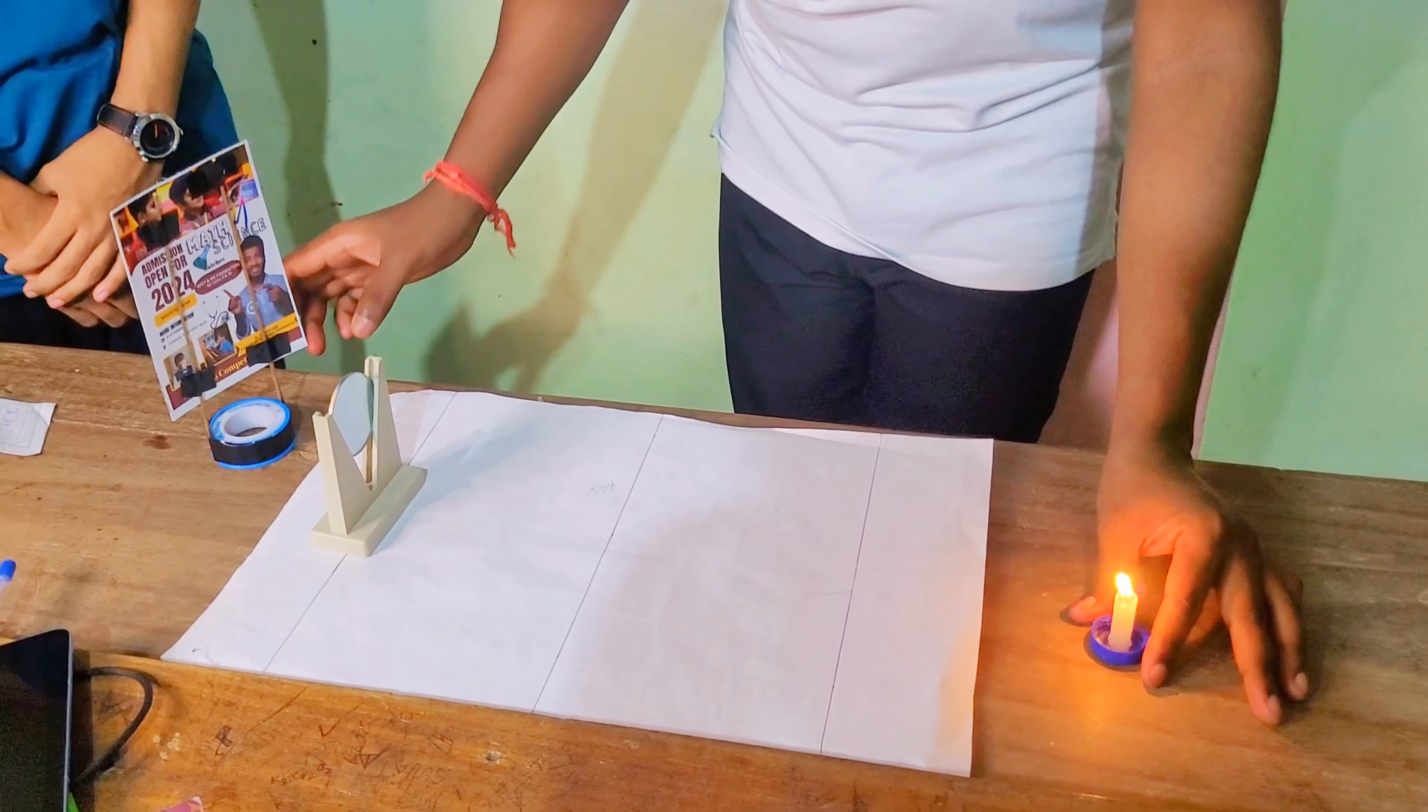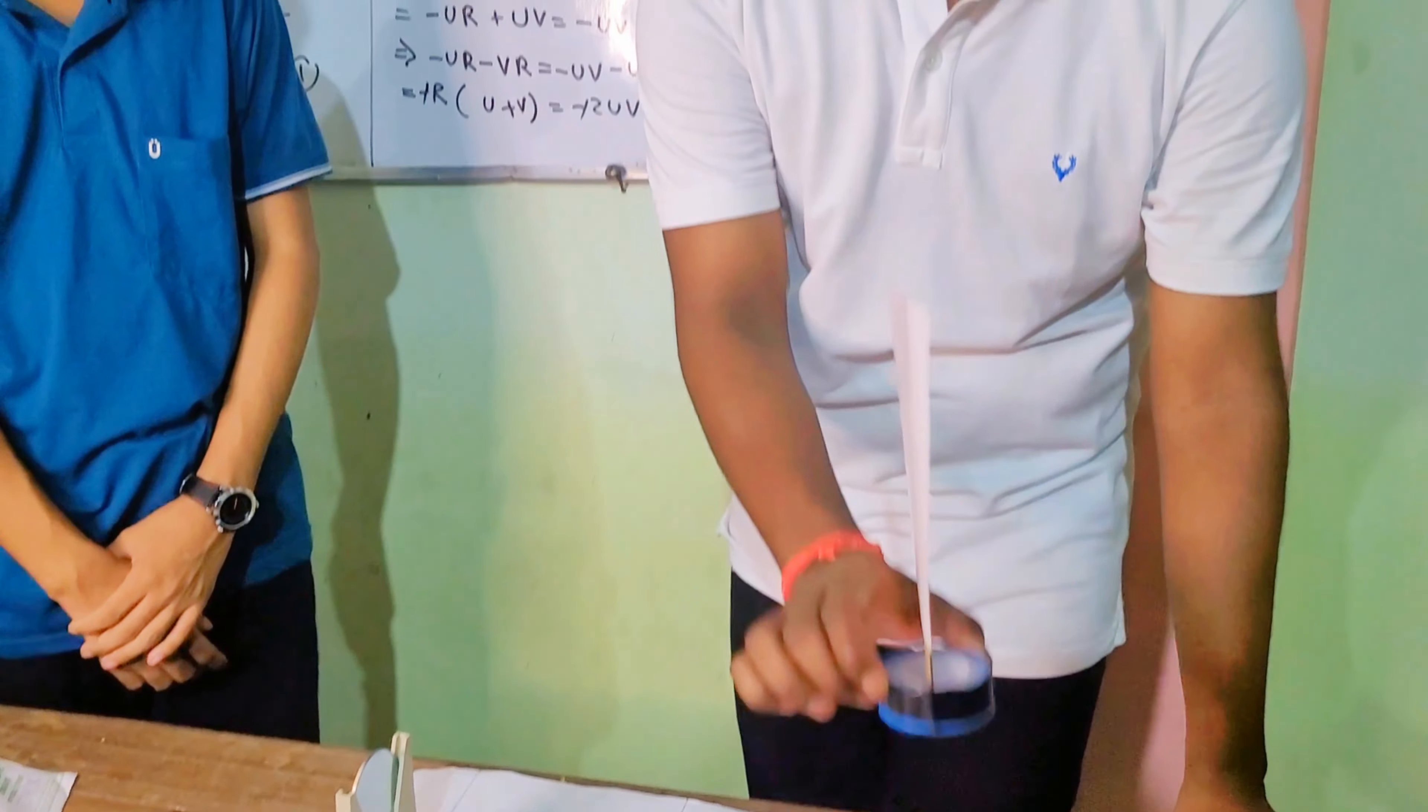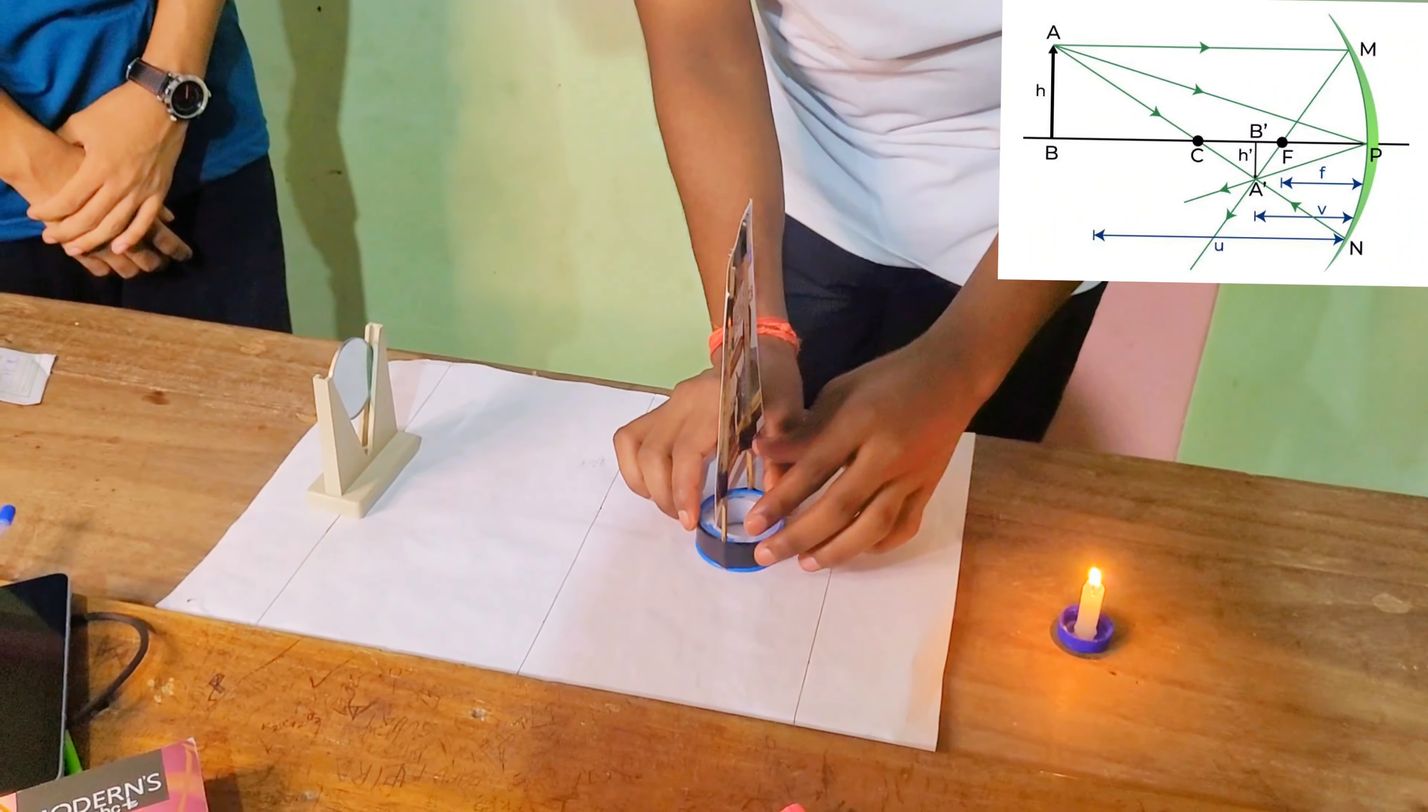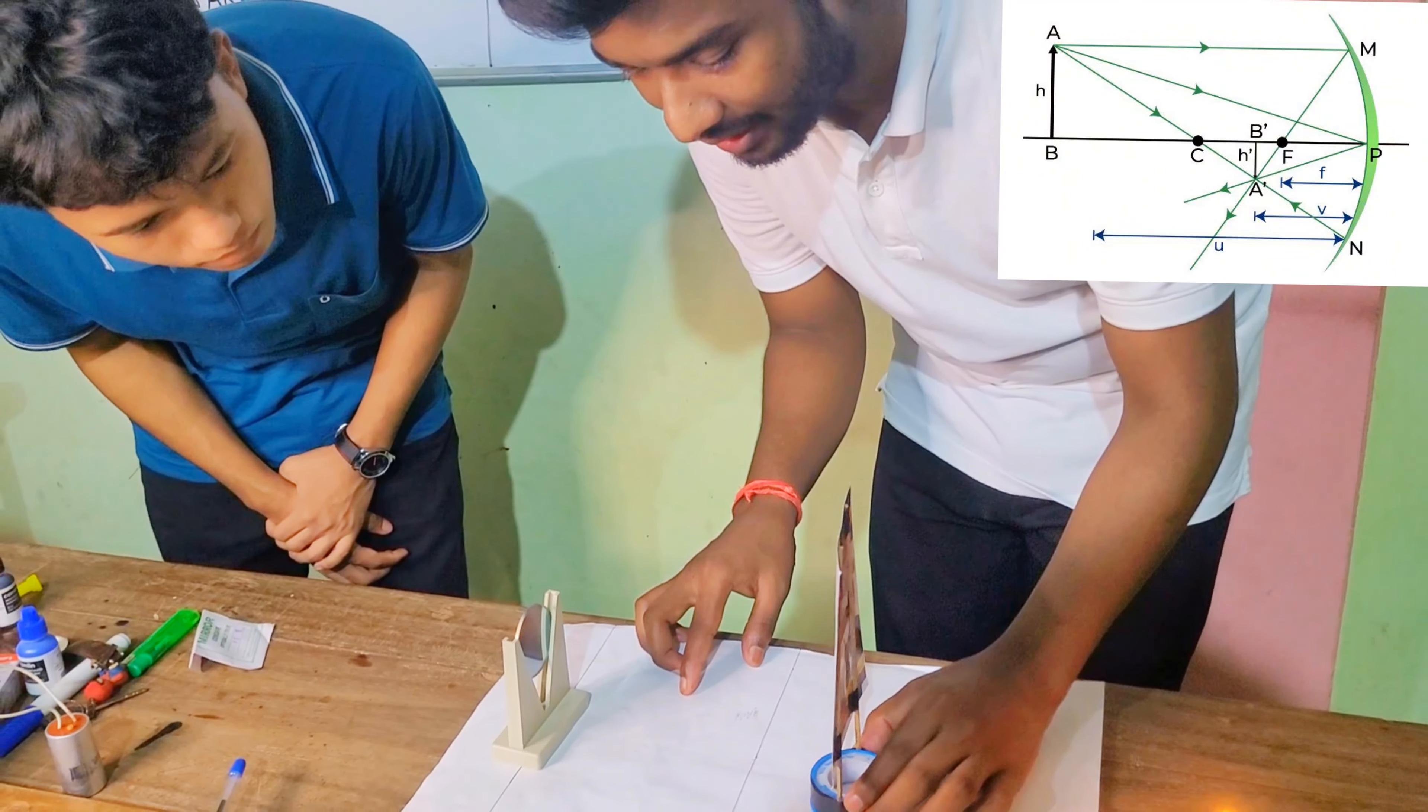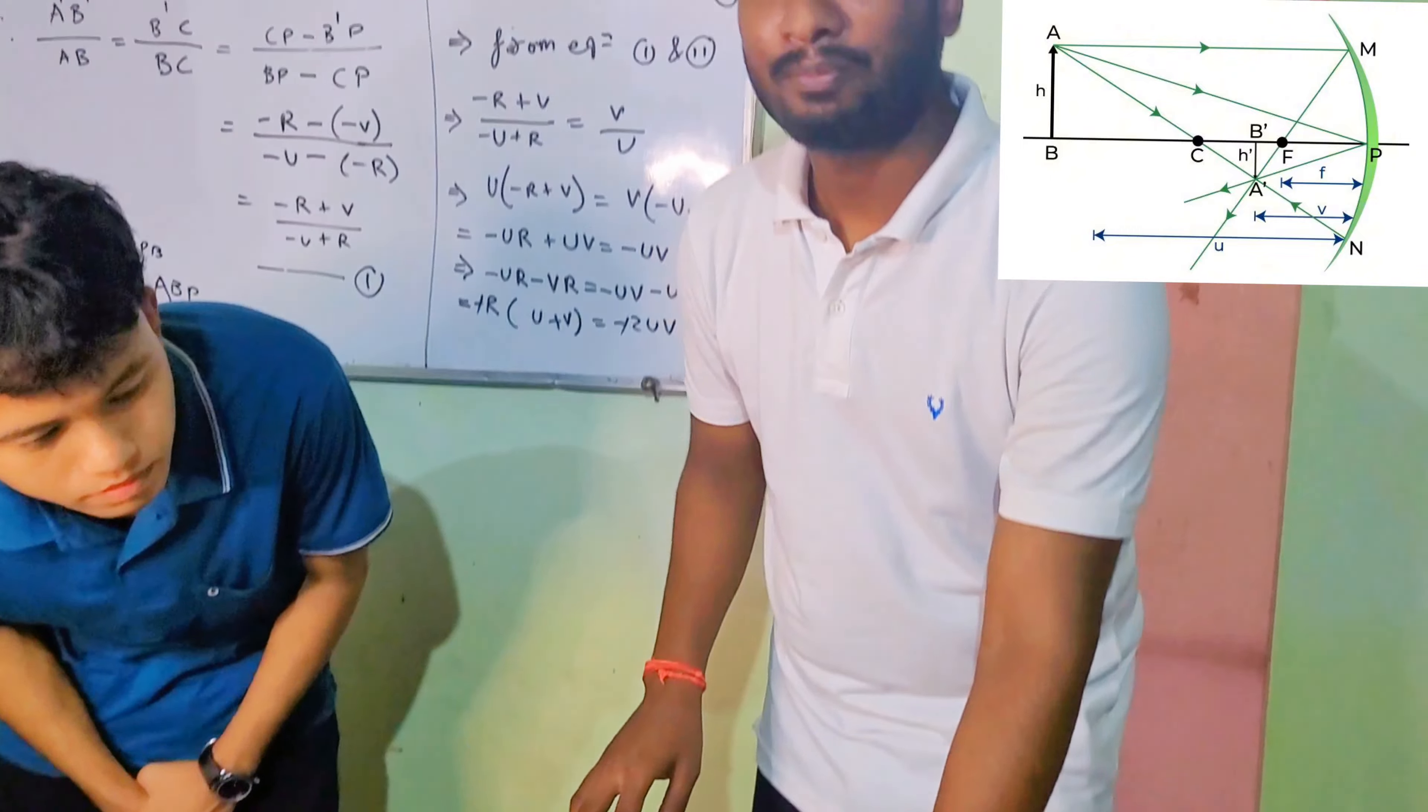Now we will see how the image forms. If I place this screen here, let's see. Here we are showing you that an image is created at a particular point. You can see this particular point? Yes. Okay.